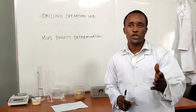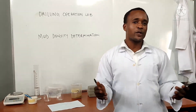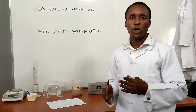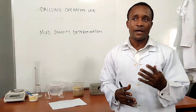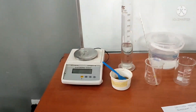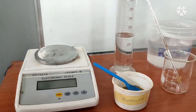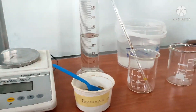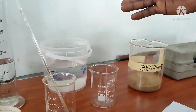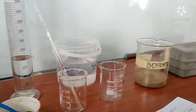Welcome to Dream Operations Lab. Today we are going to have an experiment titled Mud Institute Combination. These are the parameters for the experiment: mass balance, measuring cylinder, the bentonite, distilled water, and the beakers for the mixing.